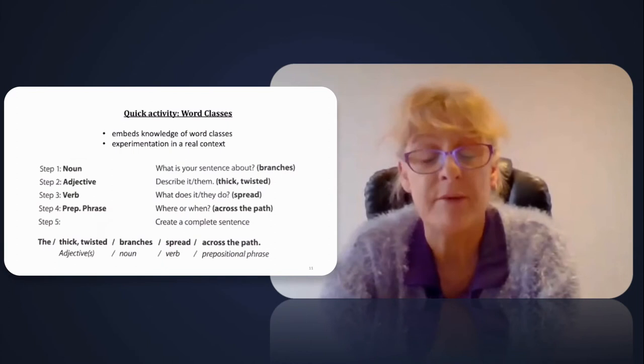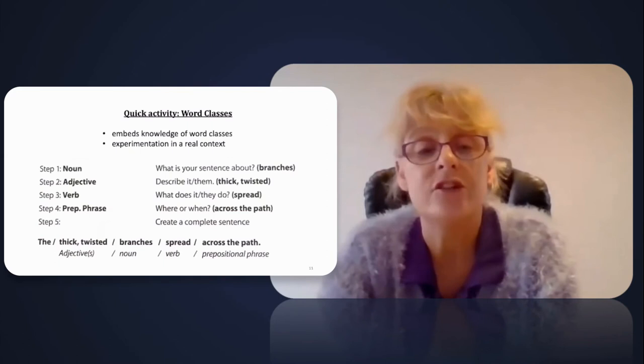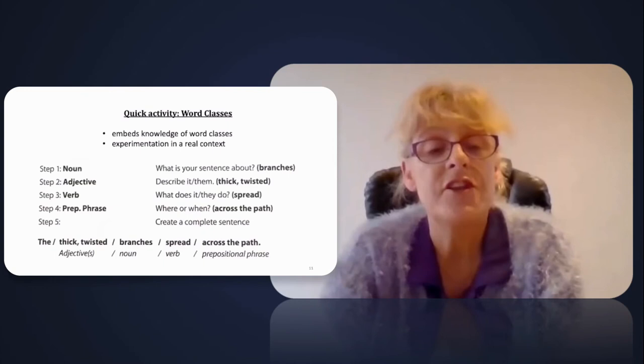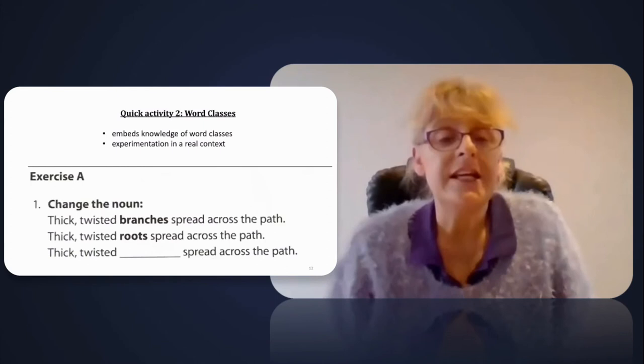Step one: what is your sentence about? Step two: describe it or them. Step three: what is it they do? And step four: where or when? Using each individual strand, you create a completed sentence. So for example, from the one above, the thick twisted branches spread across the path.